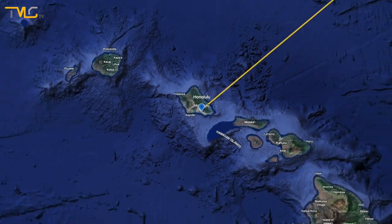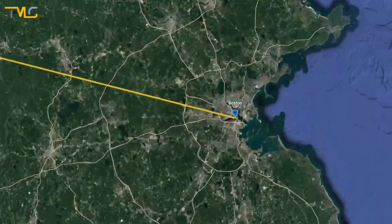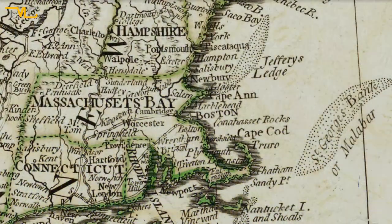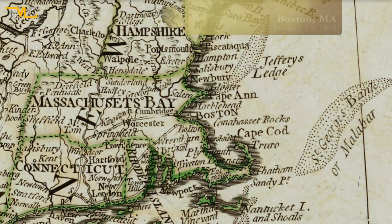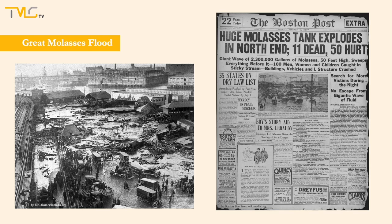For our last case, we fly from the northern Pacific Ocean to the American Northeast and jump into a time machine to go a little more than a century back in time. In Boston, Massachusetts, on January 15, 1919, a tank containing 2.3 million gallons of molasses burst, causing the event called the Great Molasses Flood. This accident caused the death of 21 people and the demolition of several buildings. The exact reason for the failure is still unknown.